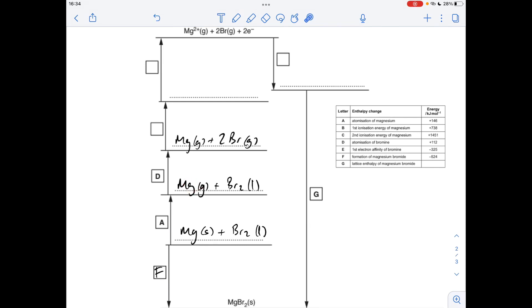So the next thing we've got to do is ionise the magnesium, so first and second ionisation energies, so that's steps B and C. Obviously there's the species that you need on that line there, don't forget that electron. And finally we've got to turn these two gaseous bromine atoms into two gaseous bromide ions, so that's the first electron affinity of bromine, which is process E.